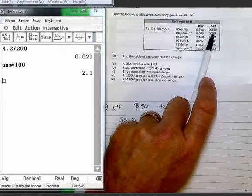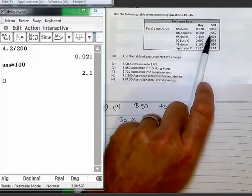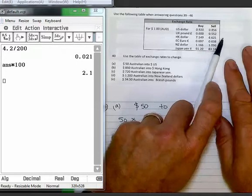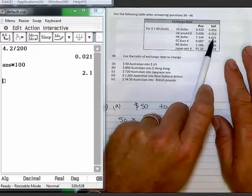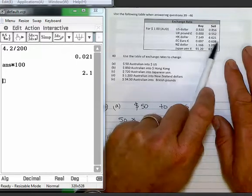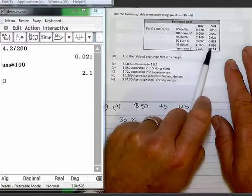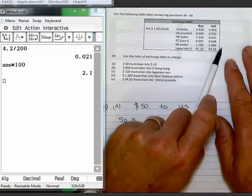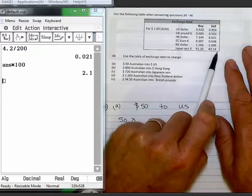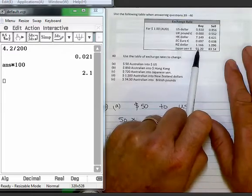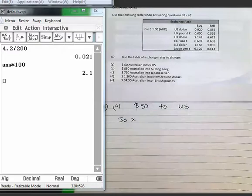In a similar way: 0.552 pounds, 6.621 Hong Kong dollars, 0.638 euros, 1.096 New Zealand dollars, and 83.14 yen. So always there's a margin so they can make a little bit of money.